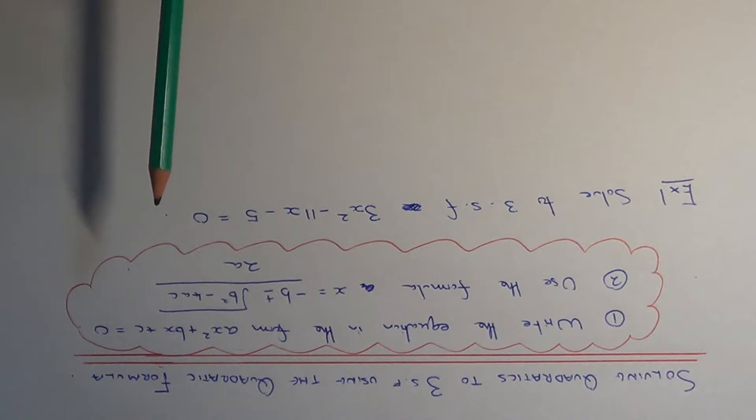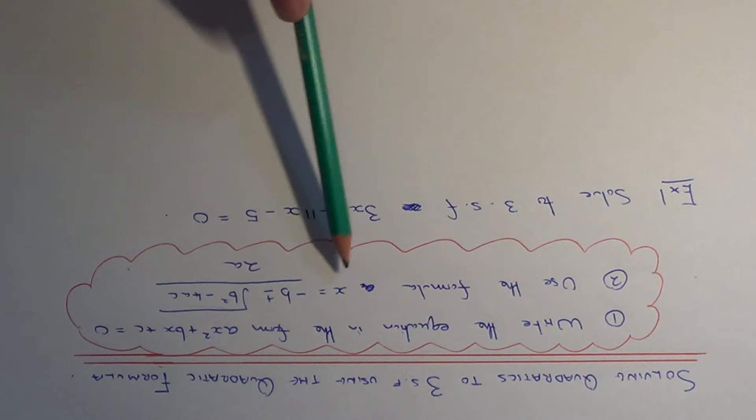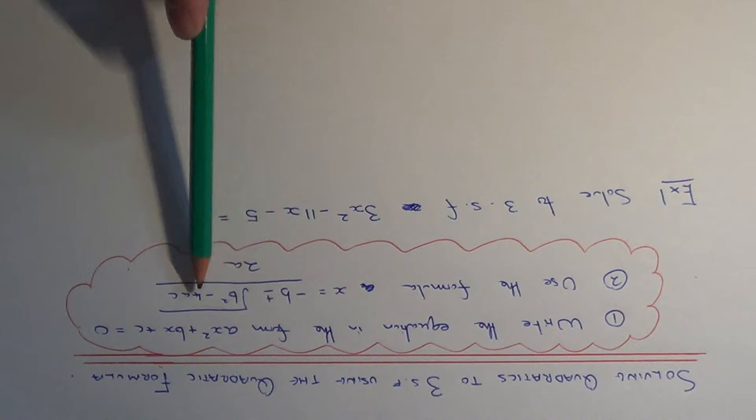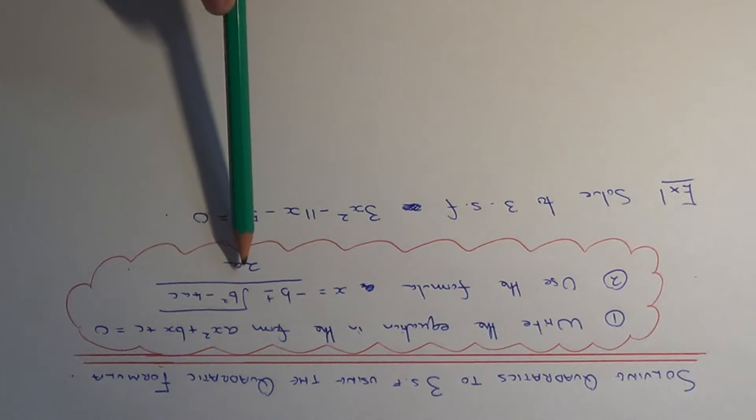Then you just need to use the quadratic formula: x equals minus b plus or minus the square root of b squared minus 4ac over 2a.